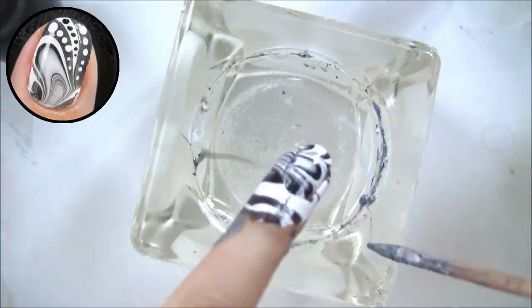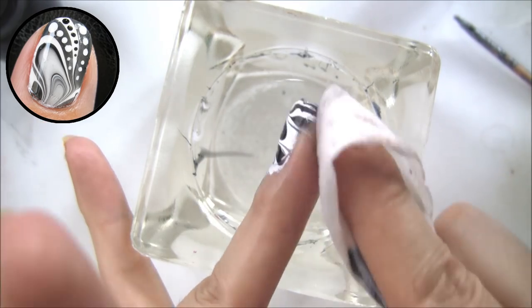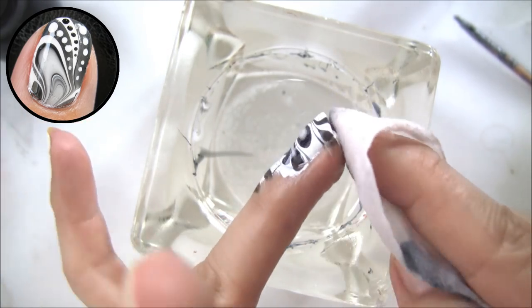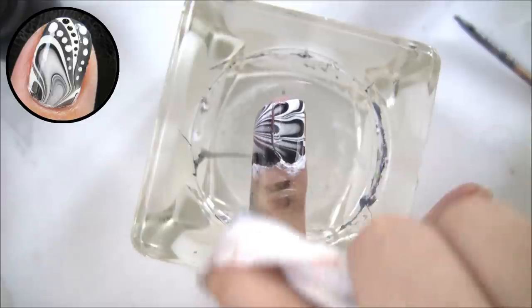Once the coast is clear, you can take your finger out and there you go. It looks like a bit of a mess, but you can easily clean that up with some nail polish remover. You can always tape around the fingers to prevent them from getting on your skin too much.